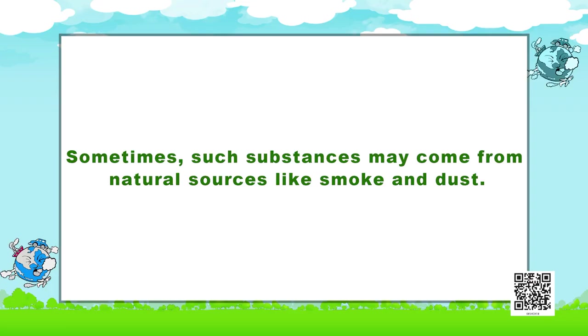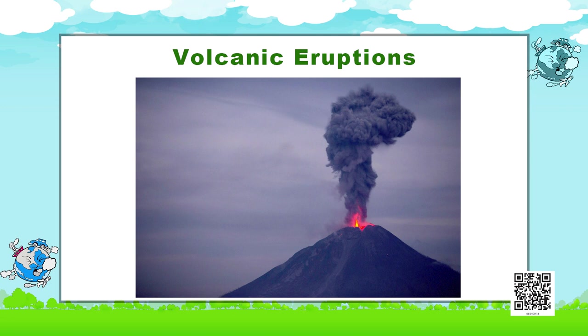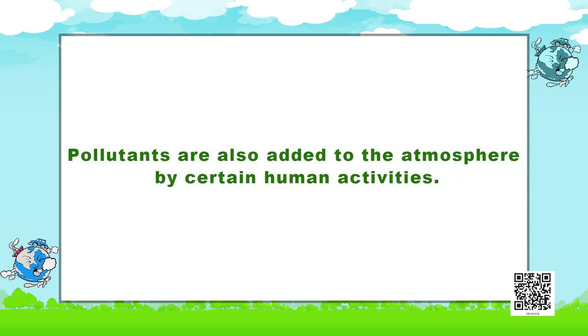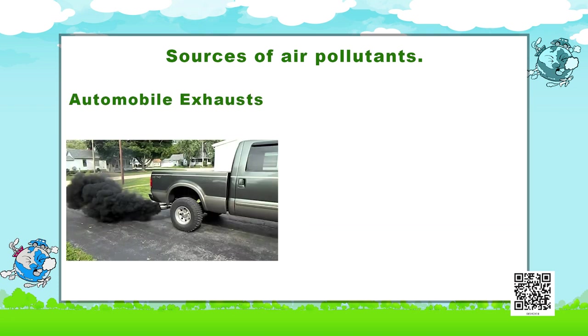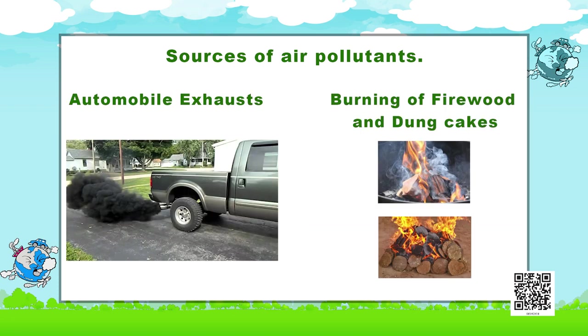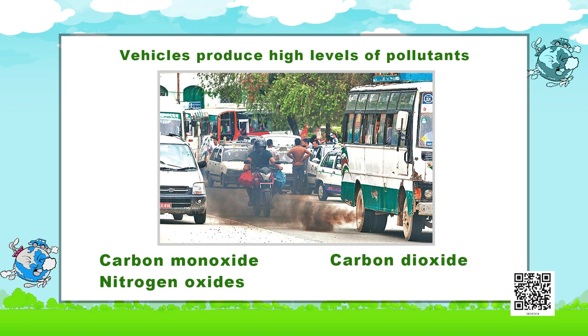Now let us understand how air gets polluted. The substances which contaminate the air are called pollutants. Sometimes such substances may come from natural sources like smoke and dust arising from forest fires and volcanic eruptions. Pollutants are also added to the atmosphere by certain human activities. The sources of air pollutants are factories, power plants, automobile exhausts, and burning of firewood and dung cakes. Vehicles produce high levels of pollutants like carbon monoxide, carbon dioxide, nitrogen oxides and smoke.